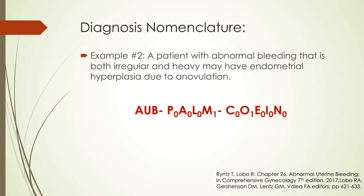What if a patient has two or more etiologies for AUB? For example, in a patient with AUB that is both irregular and heavy, she may have endometrial hyperplasia due to anovulation. Her etiologies are malignancy and ovulatory dysfunction. So that will be AUB PALM-COEIN with a subscript of 1 for M, subscript of 1 for O, and subscript of 0 for the rest of the letters.